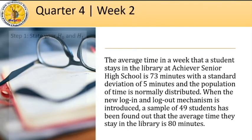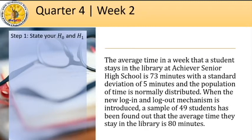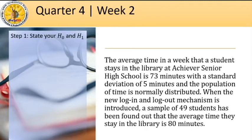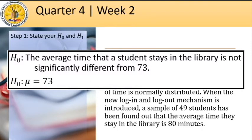Let's start with Step 1. We write our null and alternative hypothesis. Hit the pause button and try to write your own hypothesis. In the problem, we are testing if the average time that the student stays in the library is 80 minutes. We got this by testing 49 students. This is higher than the original average time of the whole Achiever Senior High School, which is 73 minutes. Now, recall that the null hypothesis is always in negative form. Therefore, we can write our hypothesis as: the average time that a student stays in the library is not significantly different from 73.